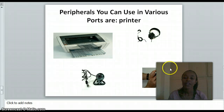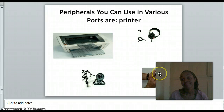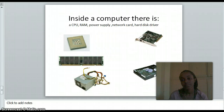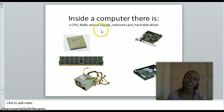Peripherals include many devices such as headsets, microphone, printer, and scanner. You can also see a tablet or iPad. Inside the computer there are many different parts. We can see the CPU here, and the RAM here.